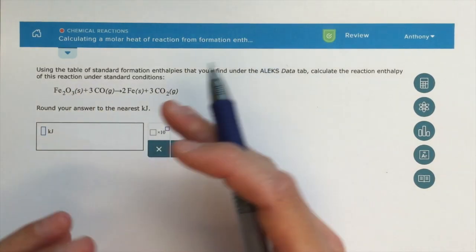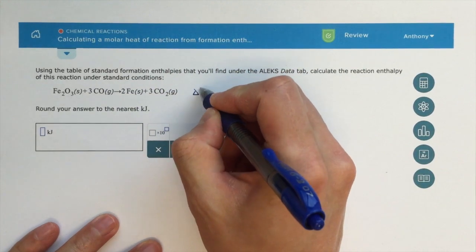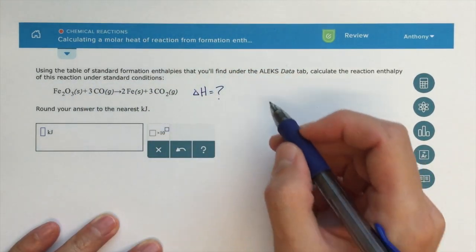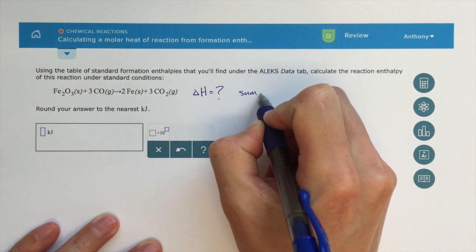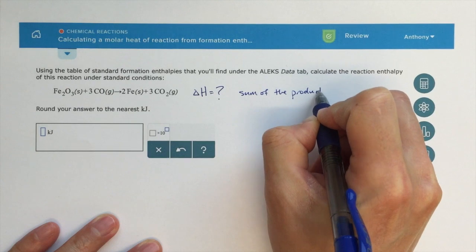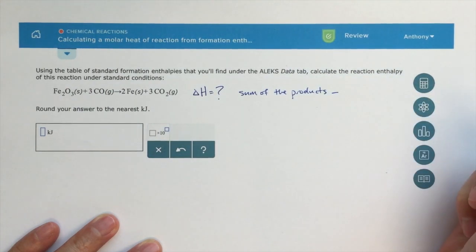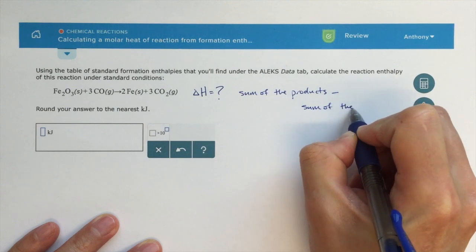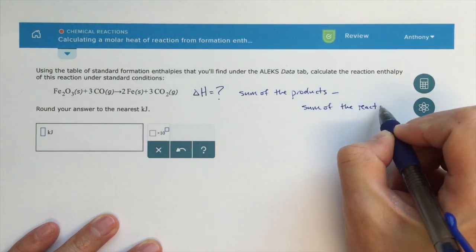So to do the delta H for this overall reaction, that's what we're looking for, we're going to take the sum of the products, the sum of the enthalpies of the products, and we're going to subtract the sum of the reactants, so this is going to be products minus reactants.